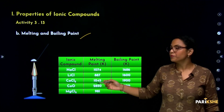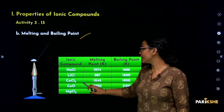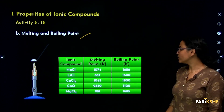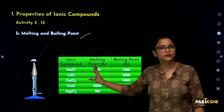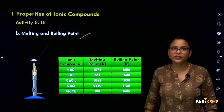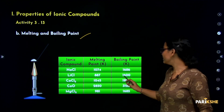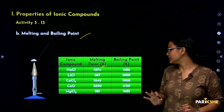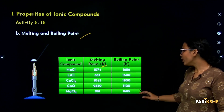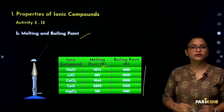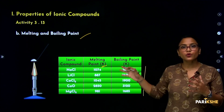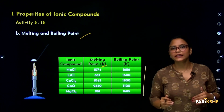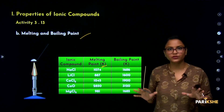Your textbook has a table listing the melting and boiling points of various ionic compounds — sodium chloride, lithium chloride, calcium chloride, calcium oxide, and magnesium chloride. Looking at the table, the melting points are in the 800s and 900s range, and boiling points are all in the 1000s range, all in Kelvin. So melting and boiling points of ionic compounds are pretty high.